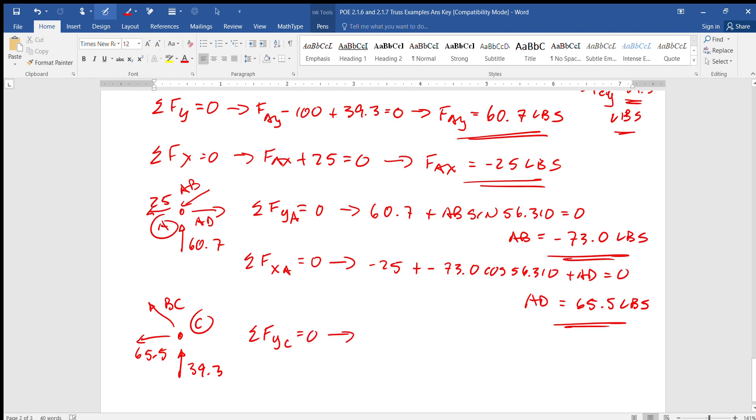Away is 65.5, up is 39.3. Let's see, and this is BC. Sum of the y's about C equals zero. So we get 39.3 plus BC sine of 30.964, again that is up above if you need it, equals zero.